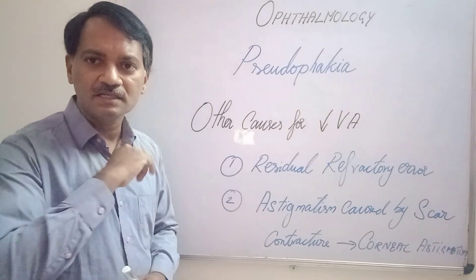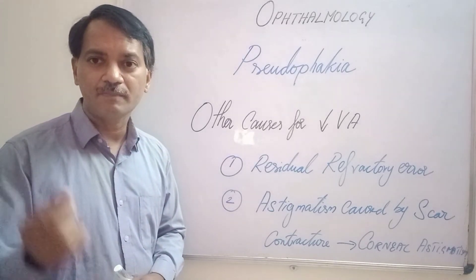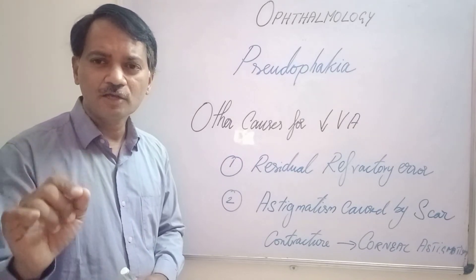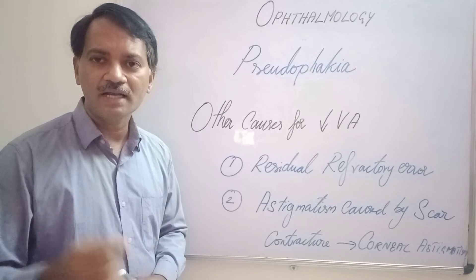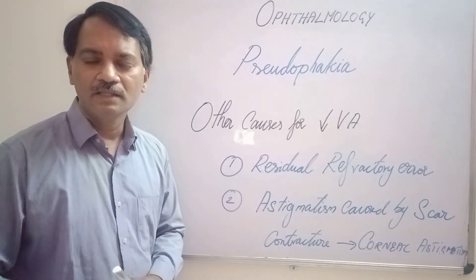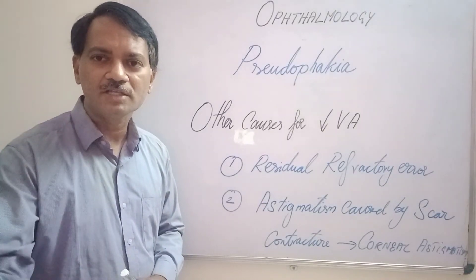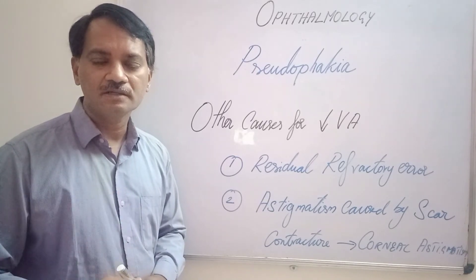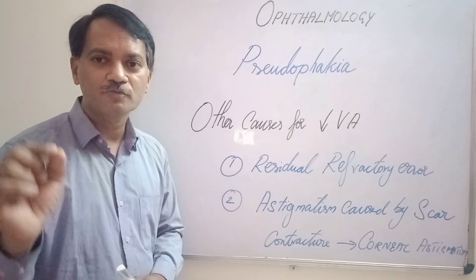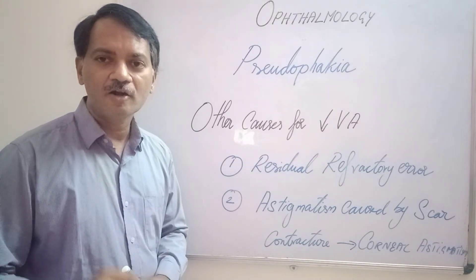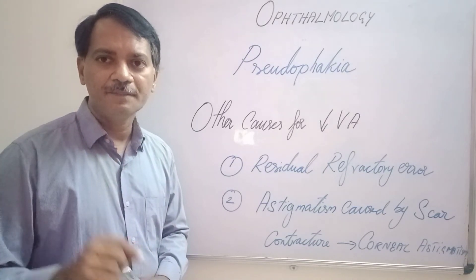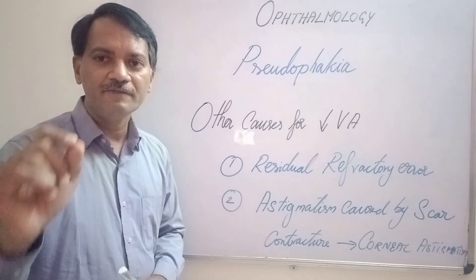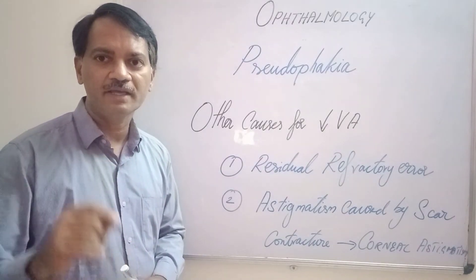With the latest surgeries like phacoemulsification, micro-phaco, or phaconet, the incisions are very very small. The resulting scar and contracture are also very small, so the refractive error caused by contracture of these small wounds is not significant. The patient will definitely have good vision even without spectacle correction following such cataract surgeries.